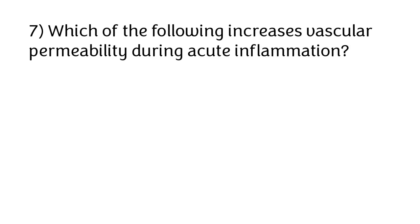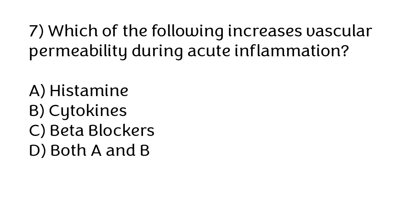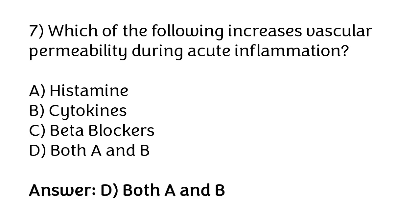Which of the following increases vascular permeability during acute inflammation? Options: histamine, cytokines, beta blockers, both A and B. The correct answer is option D — histamine and cytokines increase vascular permeability during acute inflammation.